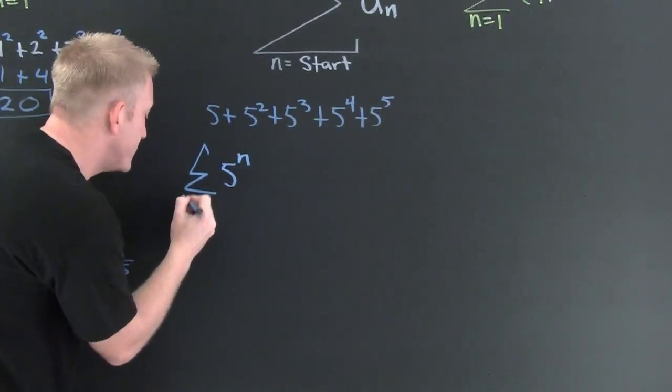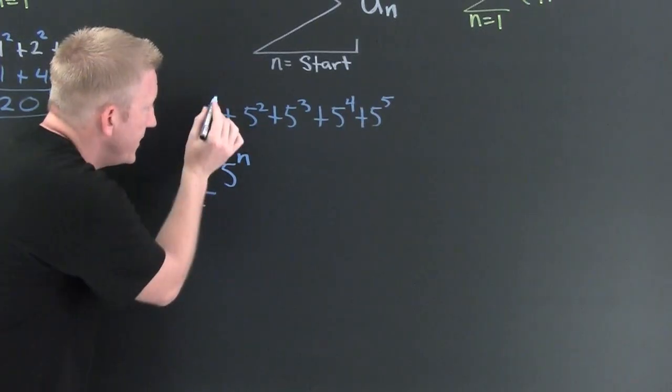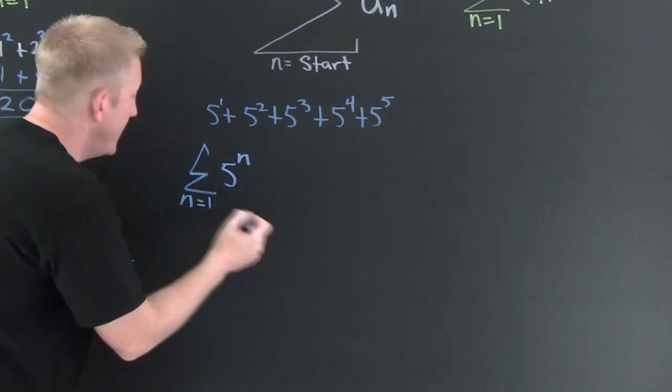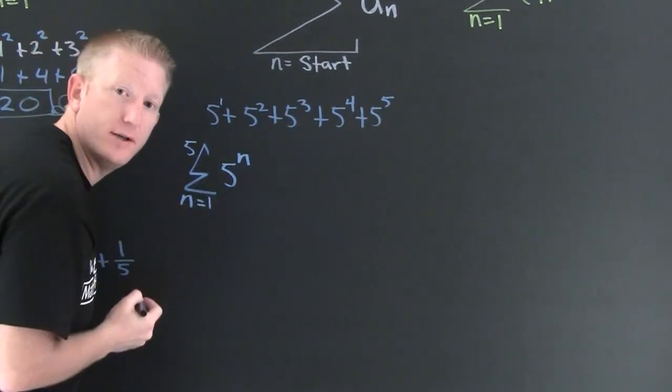But wait, there's more. What's my first n? It's a one, right? Because if there's nothing there, it seemed to be a one. And what's my last one? Five.